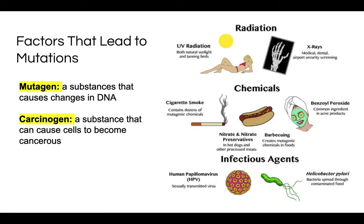Carcinogens are substances that can cause a cell to become cancerous. You might wonder: what's the difference between a mutagen and a carcinogen? Basically, certain mutagens can also be carcinogens. If a substance changes the DNA, it doesn't necessarily have to cause cancer, because some changes are not severe enough to make a cell cancerous. But when enough mutations build up, that substance can also become a carcinogen, causing a normal healthy cell to turn into a cancerous cell.